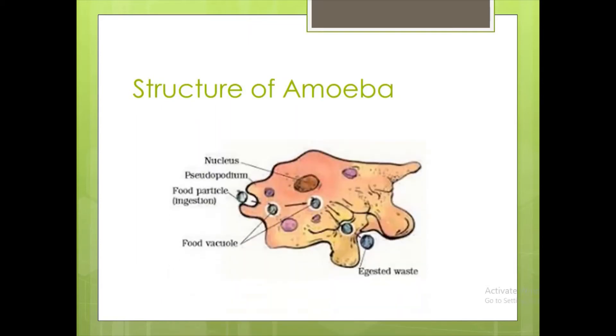Structure of amoeba. Amoeba has a cell membrane, a rounded dense nucleus, and many small bubble-like molecules in its cytoplasm.